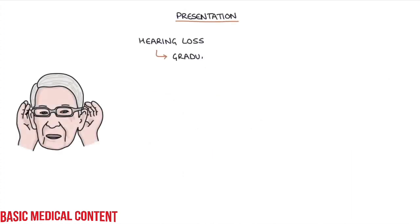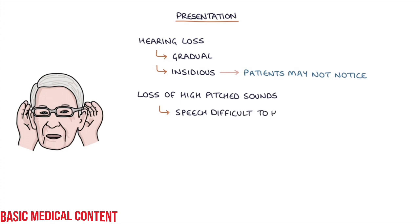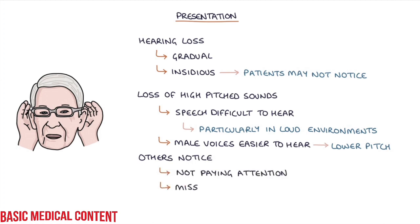Let's talk about the presentation. Hearing loss in presbycusis is gradual and insidious. The gradual onset may mean that patients do not notice a change in their hearing. The loss of high-pitched sounds can make speech difficult to hear and understand, particularly in loud environments. Male voices may be easier to hear than female voices due to the generally lower pitch. Patients may present after others have noticed that they're not paying attention or they're missing details of conversations. Sometimes patients can present with concerns about dementia when in fact the issue is hearing loss.